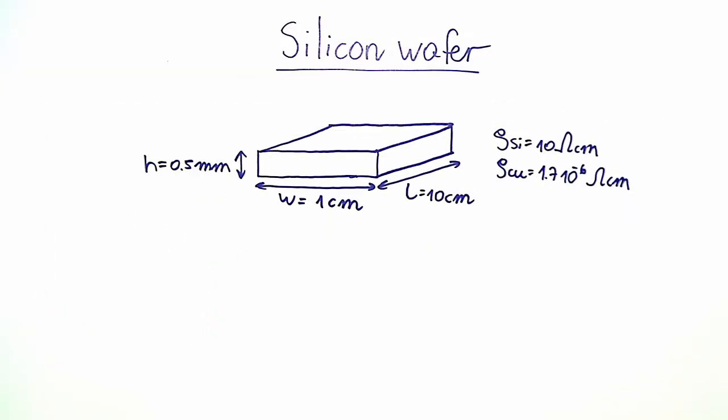Hello and welcome to the video solution of the exercise problem silicon wafer. In this problem we're going to calculate the resistance of a macroscopic three-dimensional bar of silicon and compare its resistance with that of an identical bar made out of copper.